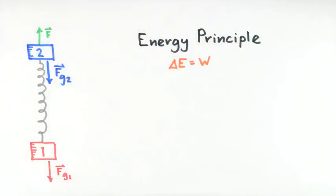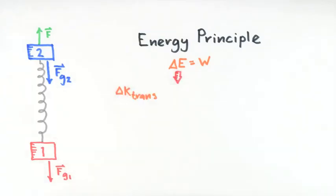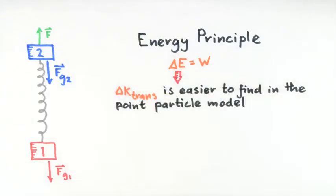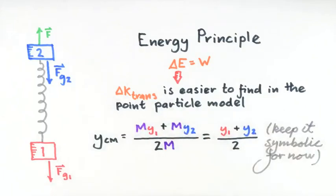Since we're first asked to find the final translational kinetic energy, we will apply the energy principle to the point particle model, which means we'll need to find the location of the center of mass for the system. We know how to do this, so let's do that calculation here, keeping our results in symbolic form and plugging in numbers at the very end.